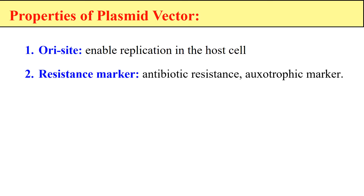Second, it also contains a resistance marker. This plasmid contains certain genes which provide resistance against specific compounds. For example, the AMP gene — the ampicillin gene — gives resistance against ampicillin. So the plasmid which has the ampicillin gene will give resistance against ampicillin, and the host which acquires this plasmid will ultimately become resistant against ampicillin.